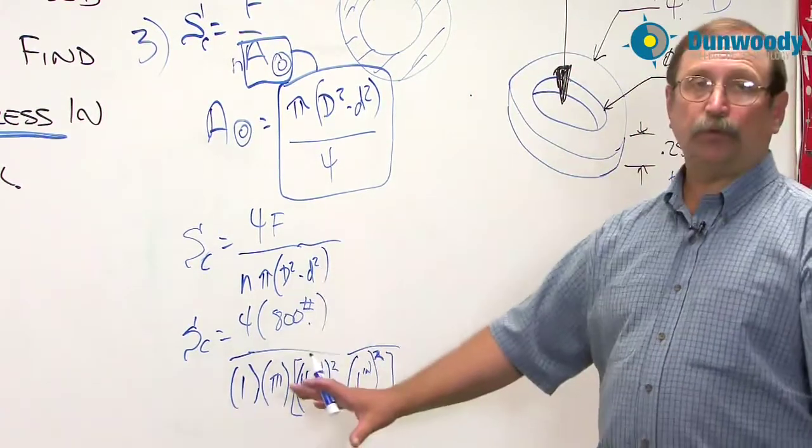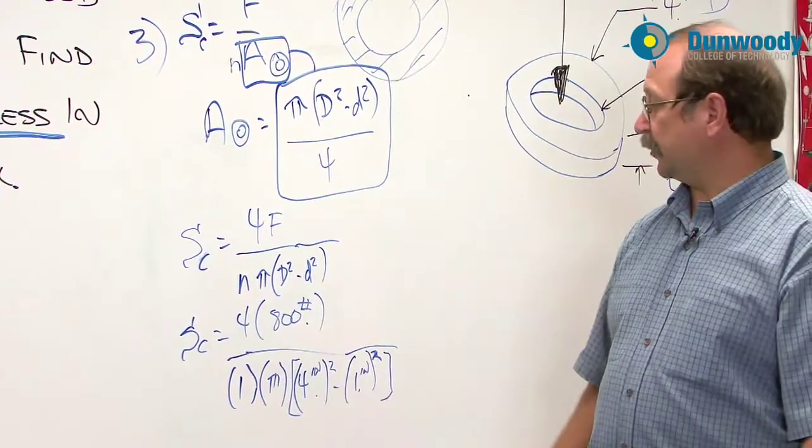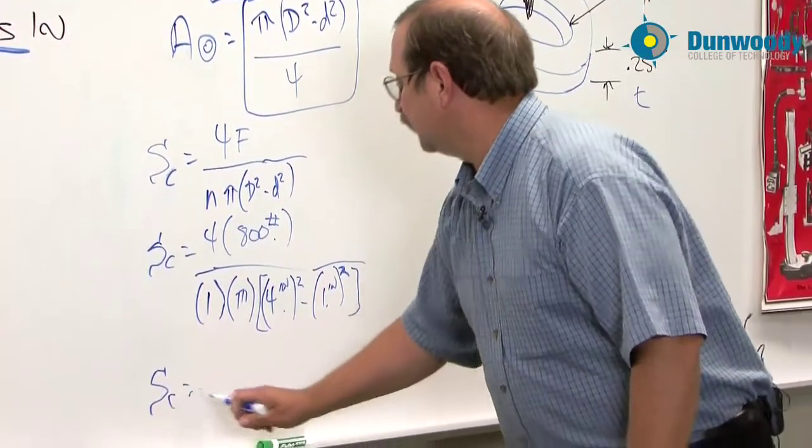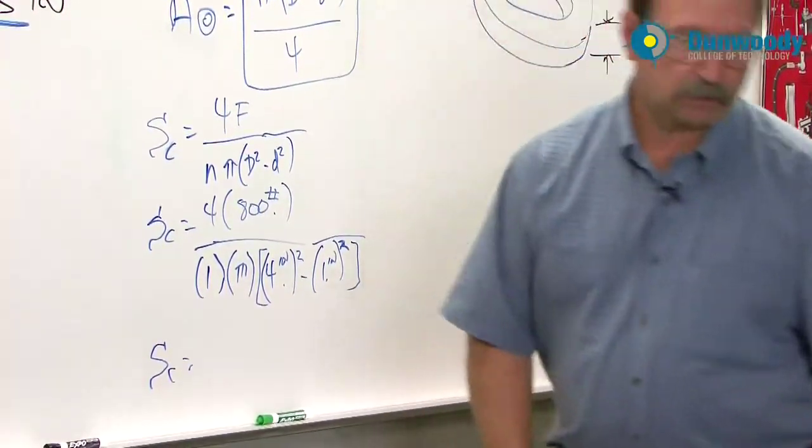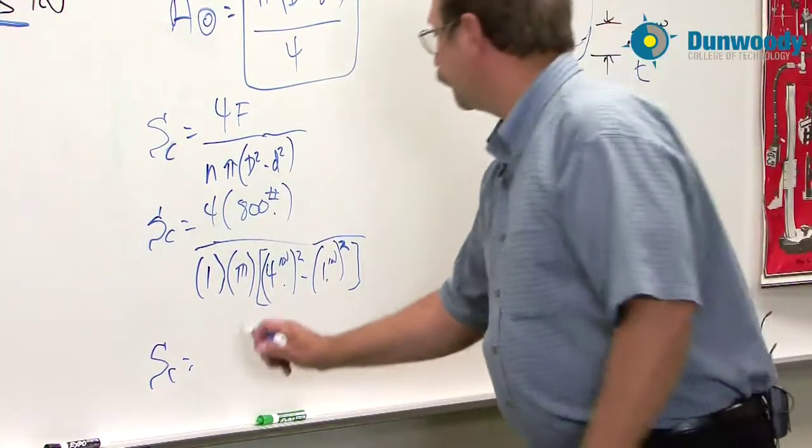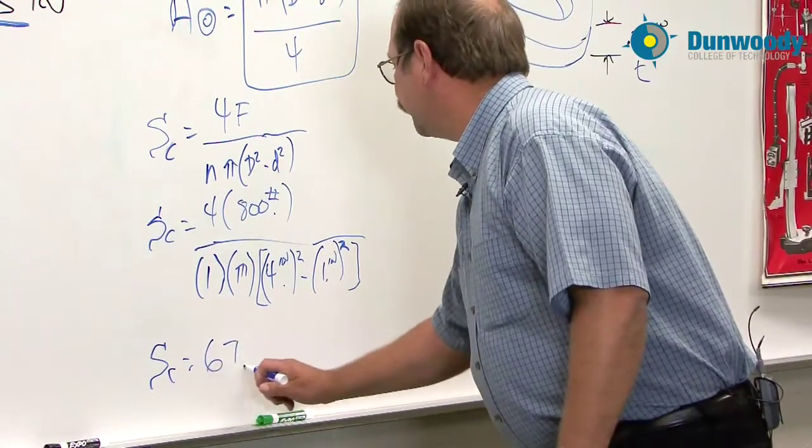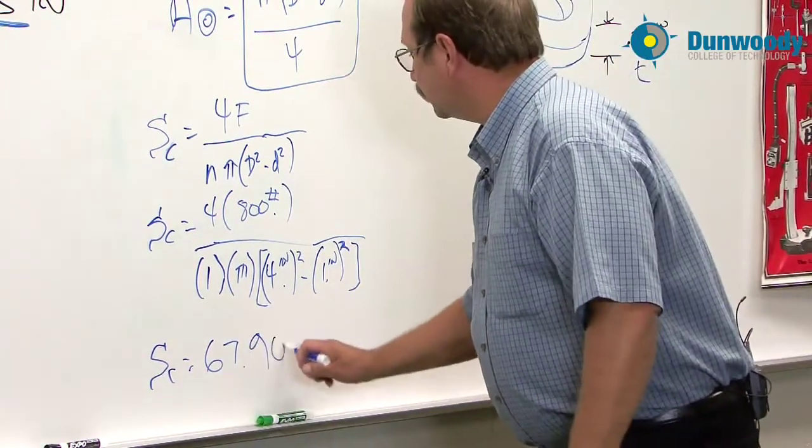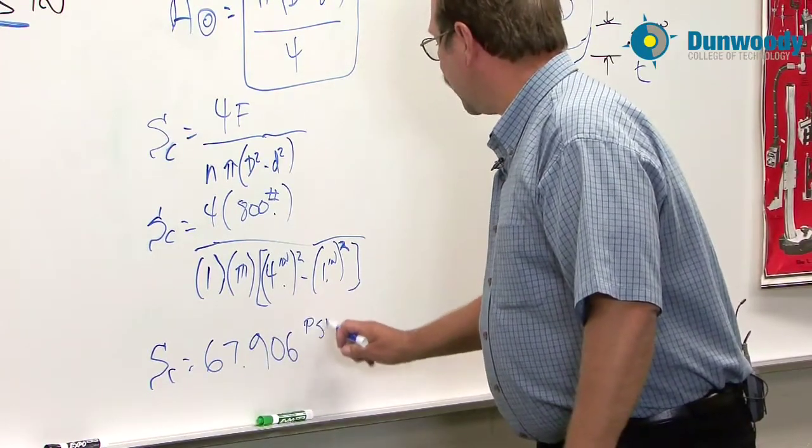When we run through and calculate the numbers that are here, we're going to end up with S sub C is equal to 67.906 PSI.